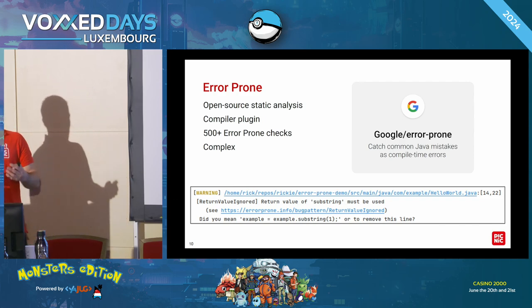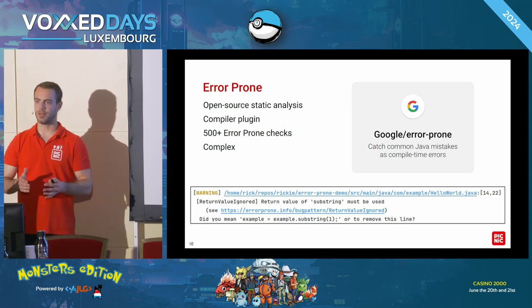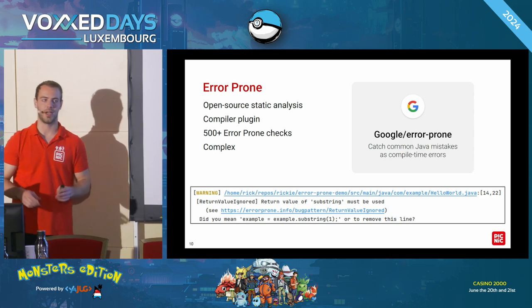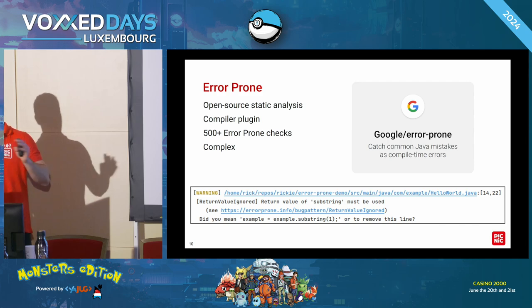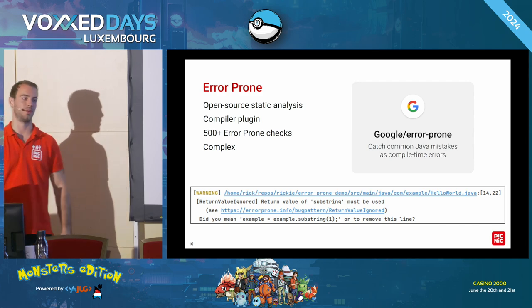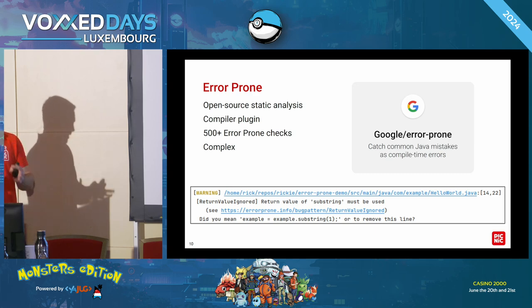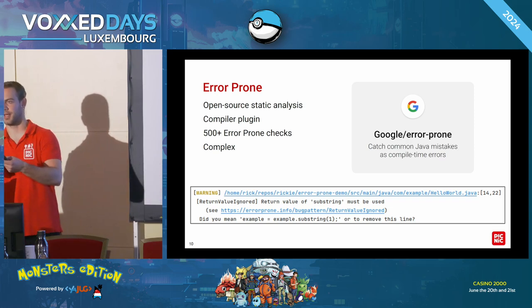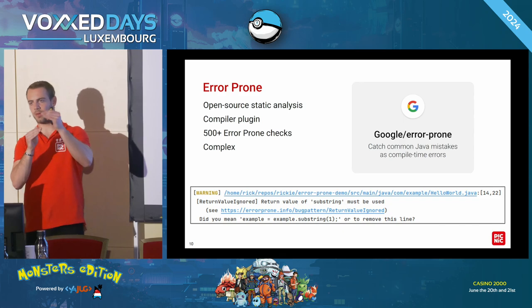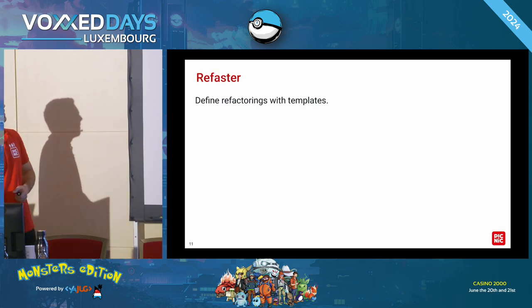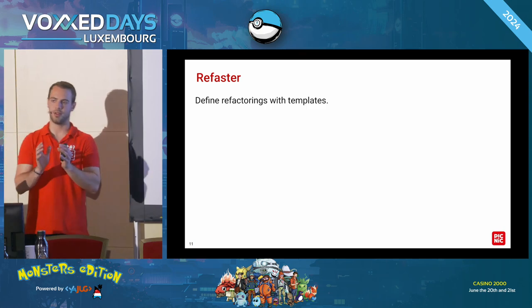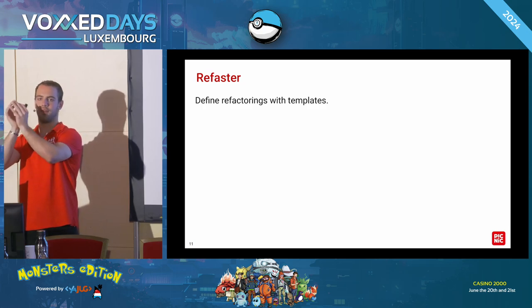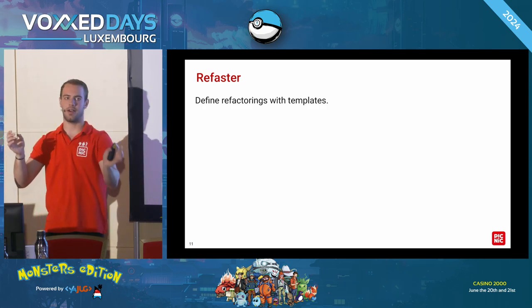You can also write your own checks, but there's one downside to Error Prone: writing your own checks can get quite complex because you have to work with the abstract syntax tree of your code. So what they did at Google — they wanted to make it very easy to let people define their own refactorings — they built a tool on top of Error Prone called Refaster. The idea of Refaster is that by using a before template, you can say, hey, I want to match this code in the code base, and if you find it, rewrite it to the content given in the after template.